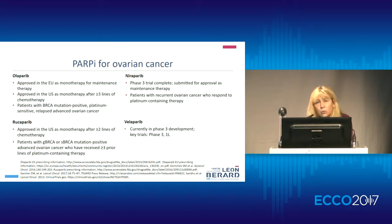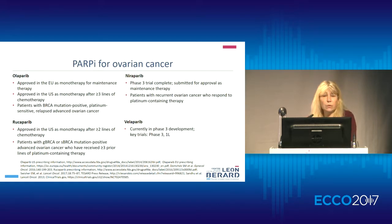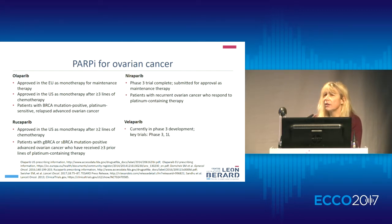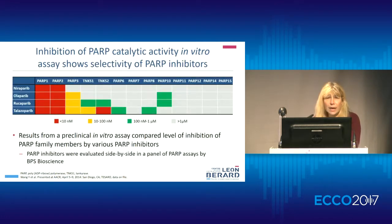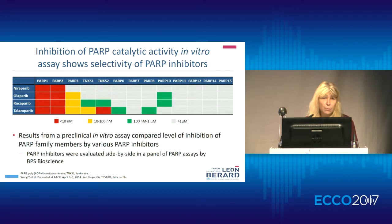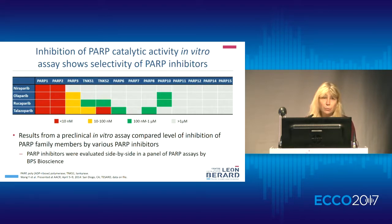Then we have Niraparib - I don't want to develop so much on Niraparib because Keta will do it after. And perhaps we will see also the Velaparib compound, which is dedicated to first line, and we have currently different Phase III trials ongoing in the US. In preclinical data, we have in vitro exploration to test the activity of all these compounds. The majority of them focus on only two PARP targets: PARP I and PARP II.